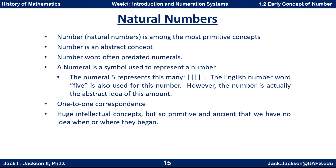However, nearly every known primitive culture has at least some rudimentary concept of the natural numbers — that's the set one, two, three, four, five, six, seven, eight, nine, and so forth: the counting numbers. Notice I did not include zero in the natural numbers. If you throw in zero as well, that's the set of whole numbers. Zero was not as quickly recognized in cultures.